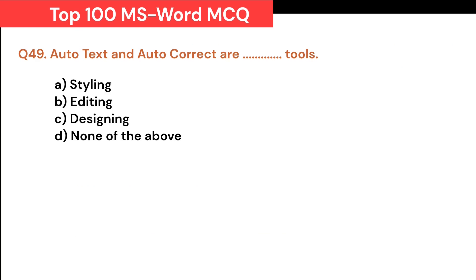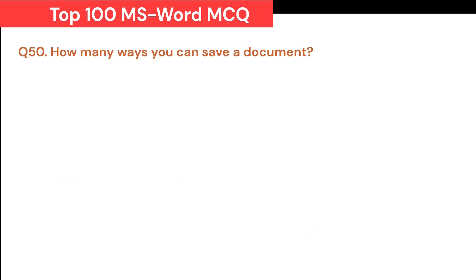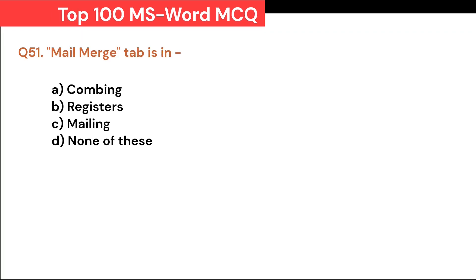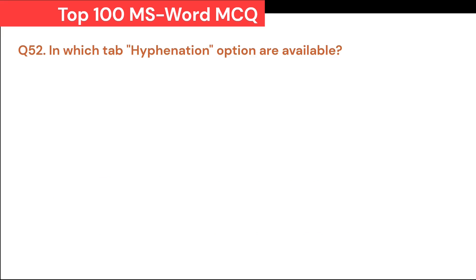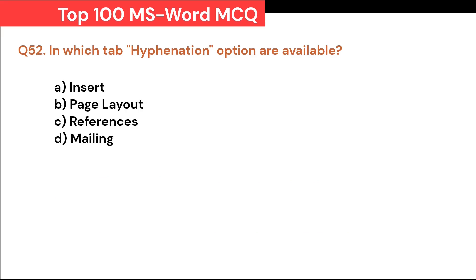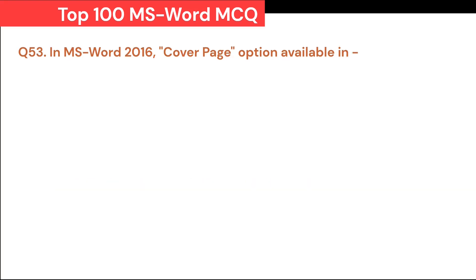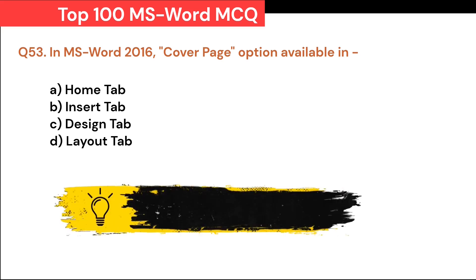How many ways can you save a document? A. 3. B. 4. C. 5. D. 6. Correct answer is A. 3. Mail Merge tab is in: A. Combing. B. Register. C. Mailing. D. None of these. Correct answer is C. Mailing. In which tab are hyphenation options available? A. Insert. B. Page Layout. C. References. D. Mailing. Correct answer is B. Page Layout. In MS Word 2016, cover page option is available in: A. Home tab. B. Insert tab. C. Design tab. D. Layout tab. Correct answer is B. Insert tab.